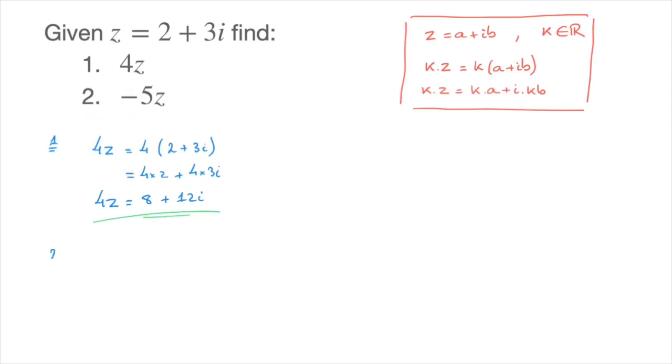We now answer question 2. And so question 2, we need to find negative 5z. Well again, all we have to do is write negative 5 times in parentheses 2 plus 3i. And once more,